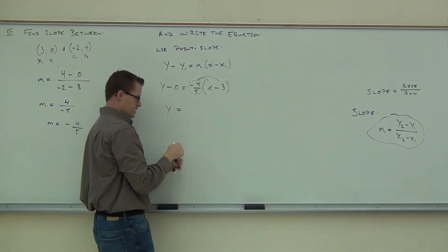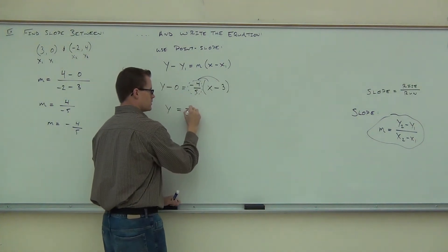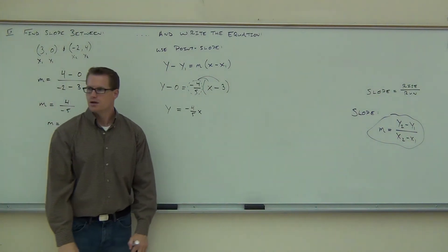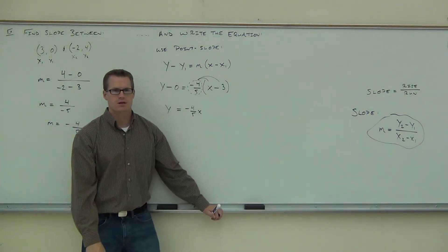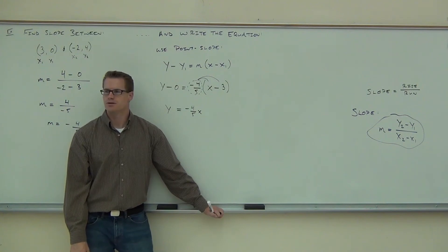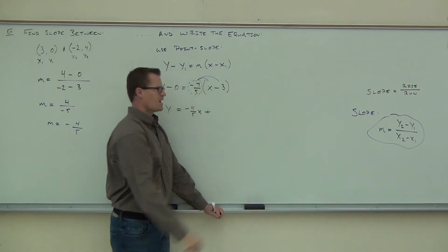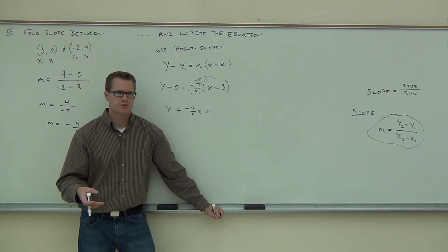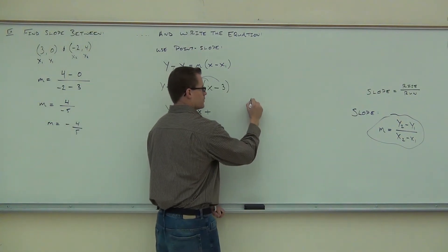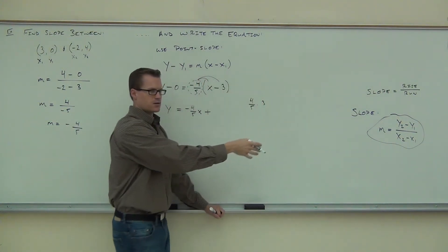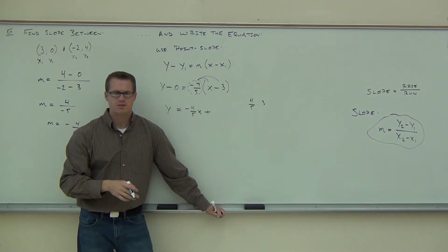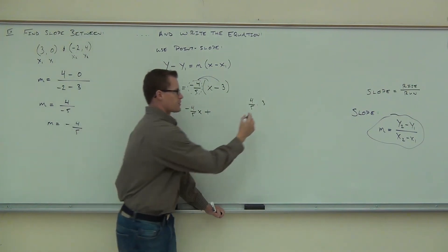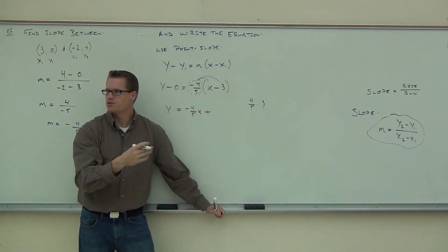We distribute that into both terms. Negative four-fifths times x is going to give you that's the easy one. The next one is a fraction. You have negative four-fifths times negative three. First thing, are you going to get a plus or a minus? Plus, definitely a plus. How much is negative four-fifths times three? You take four-fifths times three, do it on the side here. Four-fifths times three, you should know how to multiply some fractions. Four-fifths times three is twelve-fifths. You have three over one, you're going to have twelve over five.